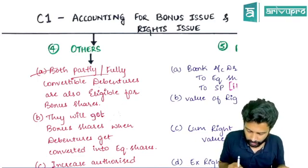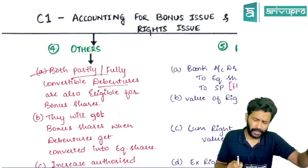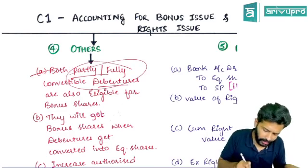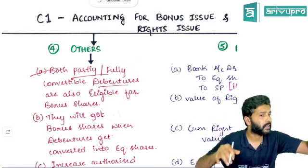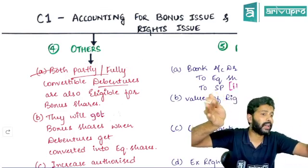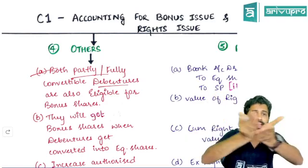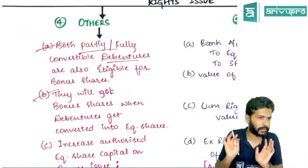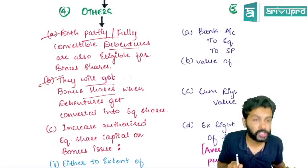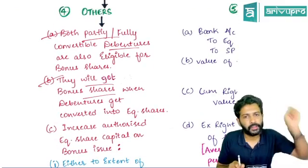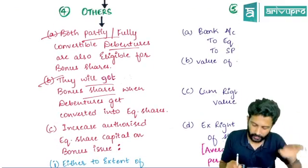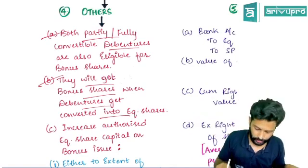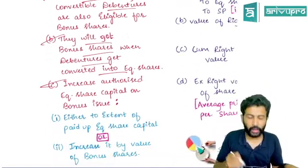Can you give bonus shares to partly convertible or fully convertible debenture holders? Whether partly or fully convertible does not matter — convertible debenture holders will get bonus shares. Do the conversion date and bonus date have to be the same? No, dates can be anything — dates are irrelevant. But they will get their bonus shares only when their debentures get converted into equity shares.